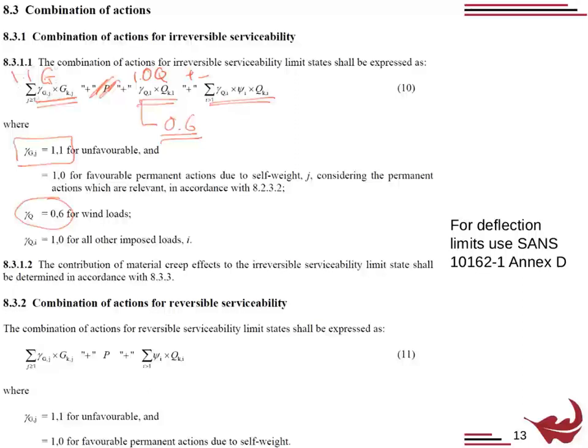Irreversible serviceability is when something deflects and doesn't come back — for example, a beam deflects and a glass window in a partition wall cracks, or the beam deflects and a partition breaks. That's irreversible serviceability — the structure hasn't failed, but because it deflected you have to go back and fix it. Similarly, if the roof sags so much that water starts ponding, that's also irreversible and you'd have to go back and fix it.